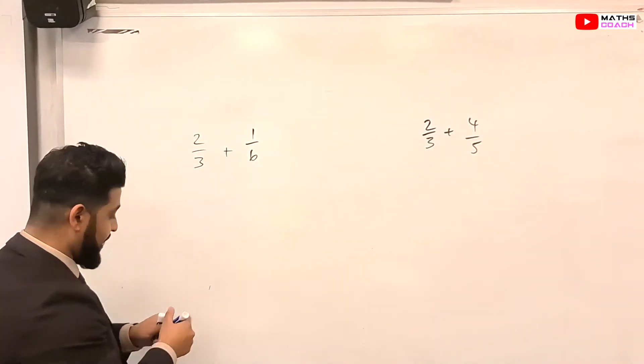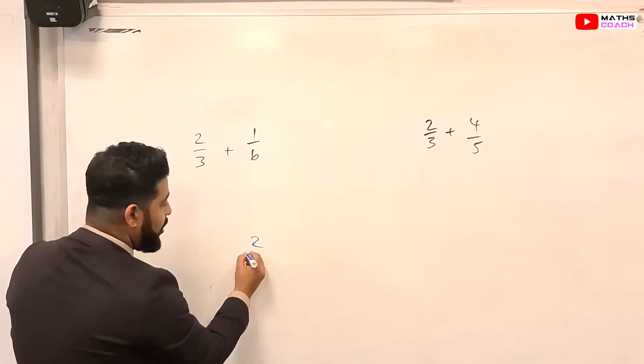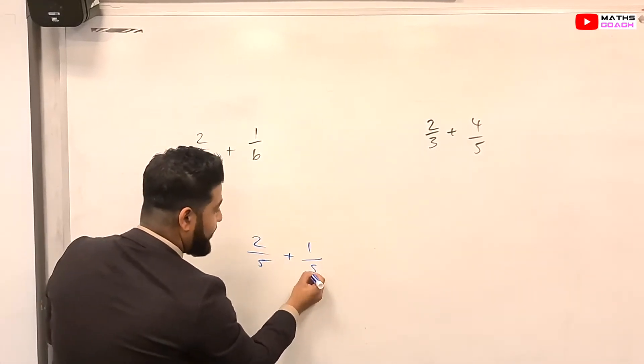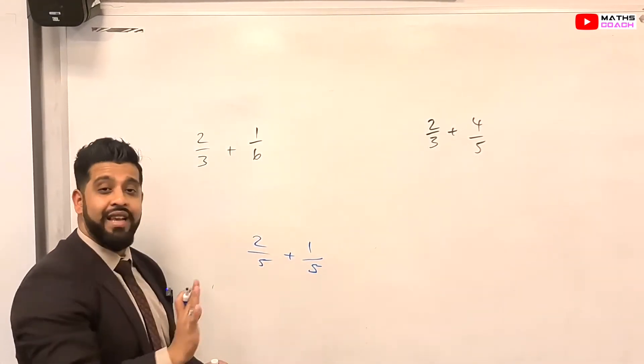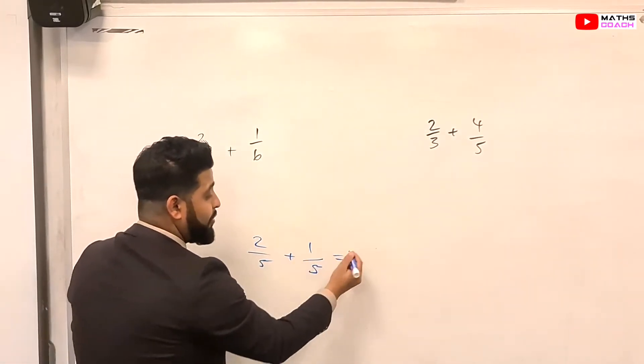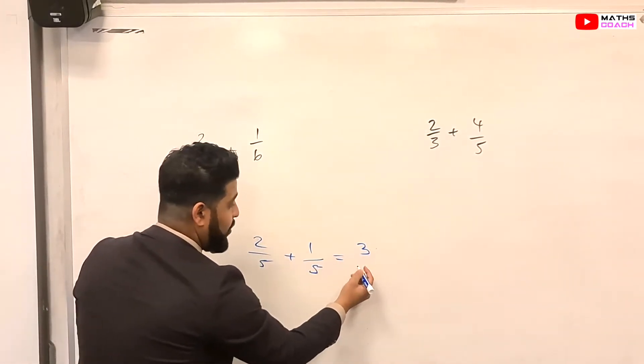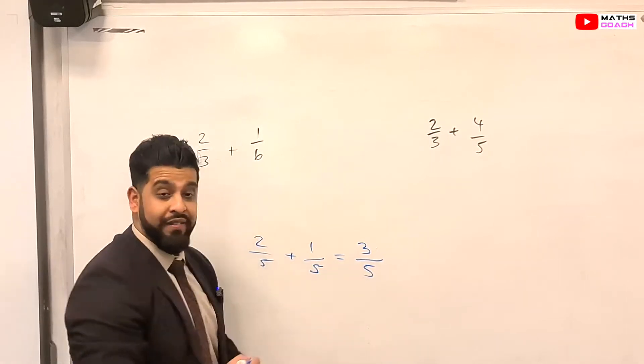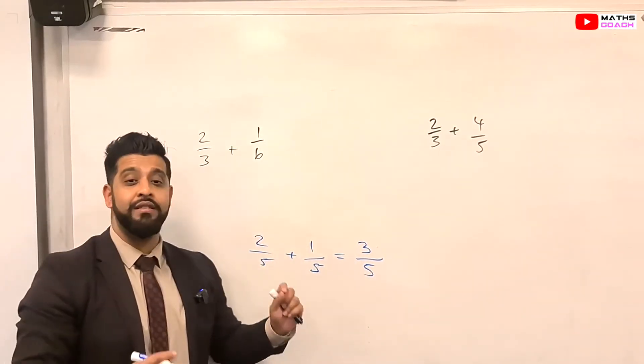It is not like, for example, when you have 2 over 5 plus 1 over 5, the denominators are exactly the same. So what you can do is just add the numerators to give you 2 plus 1, which is 3, over 5. That's okay, because the denominators are the same.